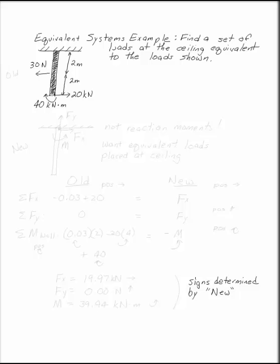Find a set of loads at the ceiling equivalent to the loads shown. In this case, you have a 30 newton load to the left and a 20 kilonewton load to the right. A 40 kilonewton meter moment at the tip of the beam. The beam is 4 meters long.